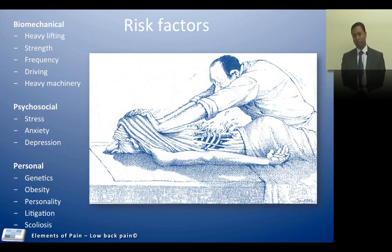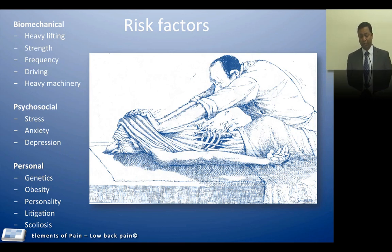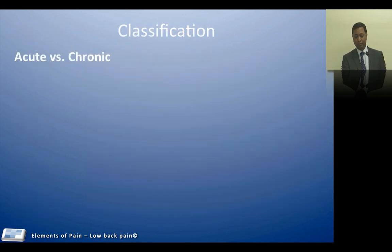Psychosocial factors such as stress, anxiety, and depression have a significant role. Personal factors such as predisposed anatomical changes may also have a significant role. Genetics — we know that patients with congenital insensitivity to pain, such as those with the SCN9A gene, would have far lesser pain than others who are highly predisposed to developing chronic pain. Obesity, personality-related factors, litigation, and other structural changes may also contribute to low back pain.